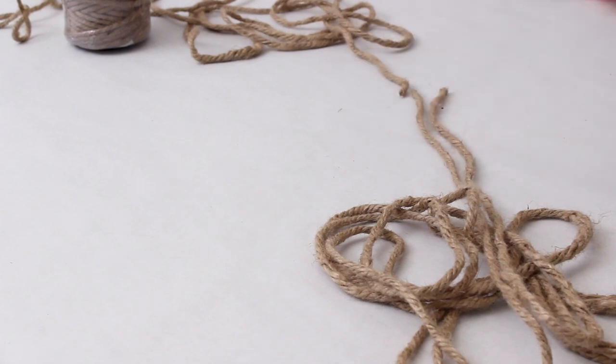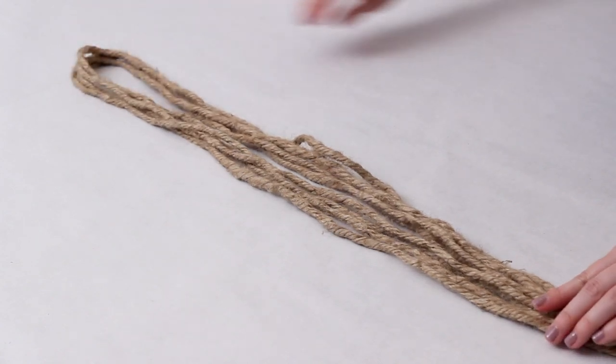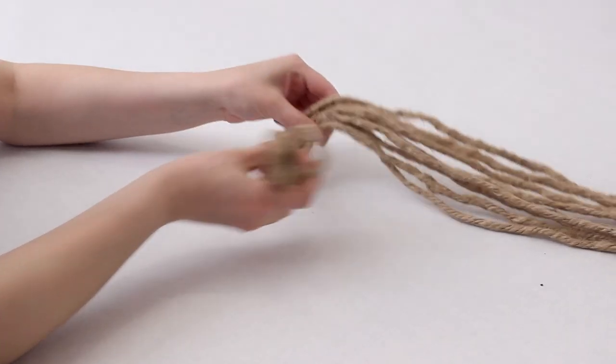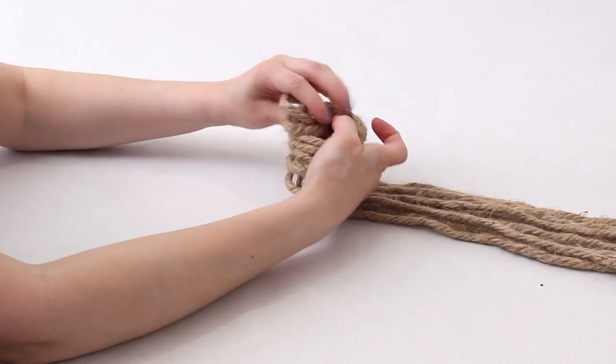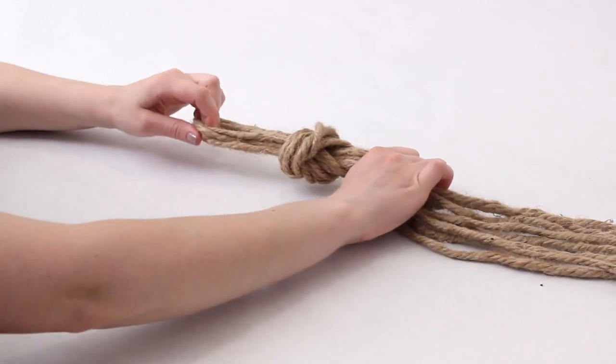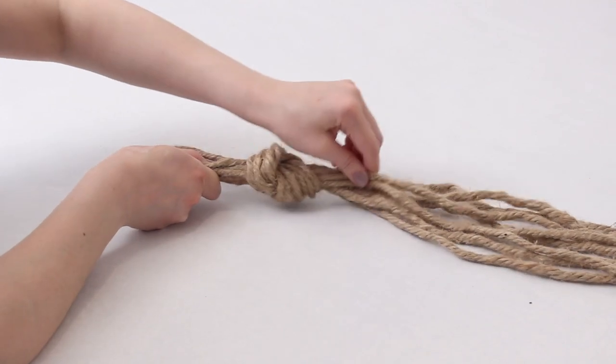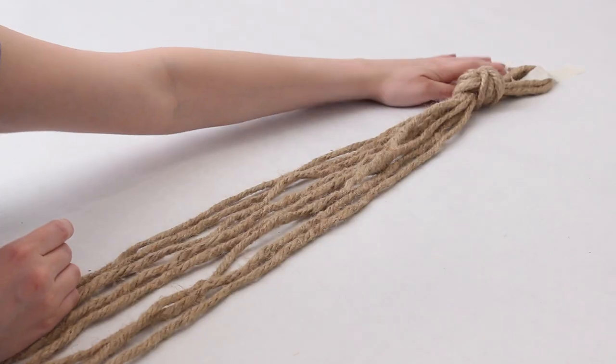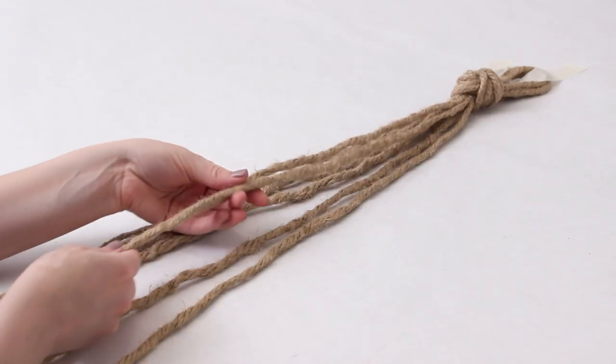Next I lined up all the ends so they were even and then I folded it in half so that I could make a loop at the top. I took that little loop and I made a big knot at the top and just pulled it really tight. To make the knot even tighter you can take each of the individual strings of rope underneath the knot and pull on each one until your knot is very tight and looks the way that you want it to look. Next I taped down that top part and made sure it was secure.